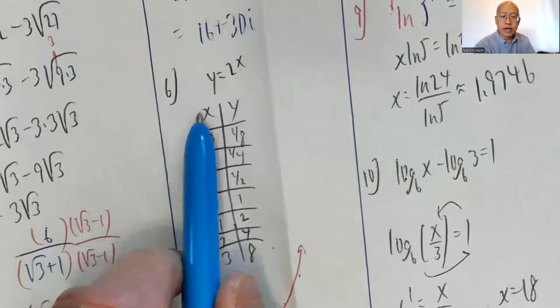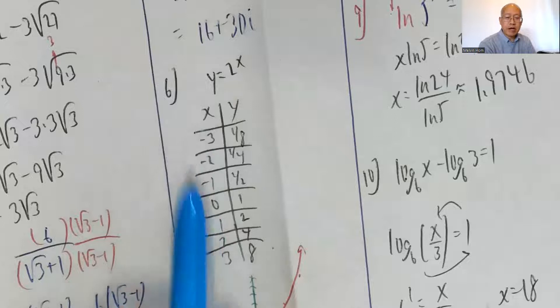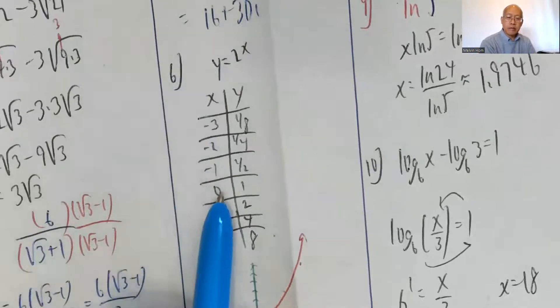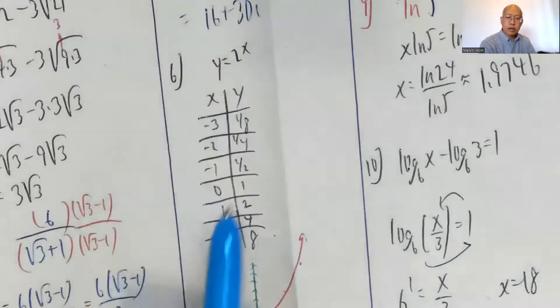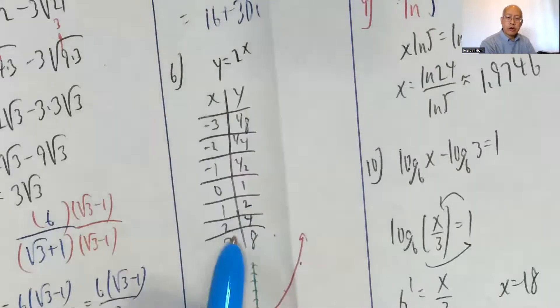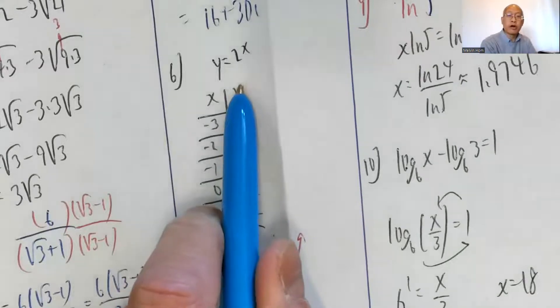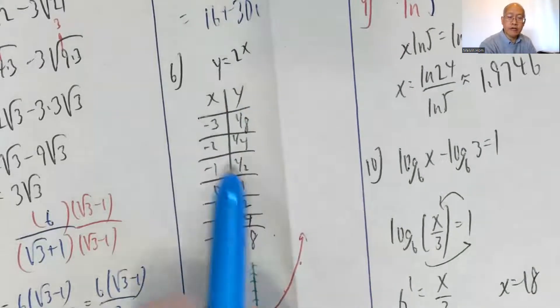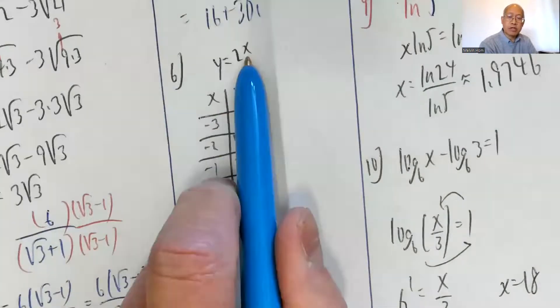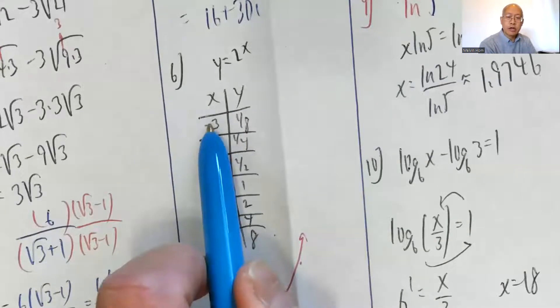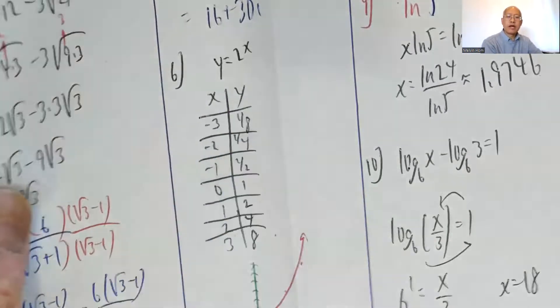Number 6: y equals 2 to the x power. I make a table from negative 3 to 3. I plug in 0, I get 1. Plug in 1, I get 2. 2 squared is 4. 2 cubed is 8. Negative 1, 2 to the negative 1 means 1 over 2 to the 1 or 1 half. 2 to the negative 2 means 1 over 2 squared, 1 fourth. 2 to the negative 3 means 1 over 2 cubed, 1 eighth.